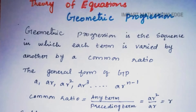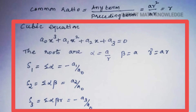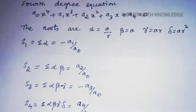The common ratio is any term divided by its preceding term, that is r. For a cubic equation, the roots are of the form a/r, a, ar. For a fourth-degree equation, the roots are of the form a/r, a, ar, ar².